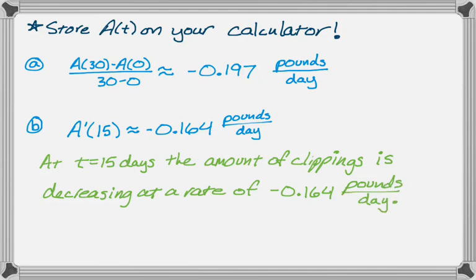Let's take a look at the next one. We need the time at which the amount of grass clippings in the bin is equal to the average amount of grass clippings in the bin on the interval from 0 to 30.